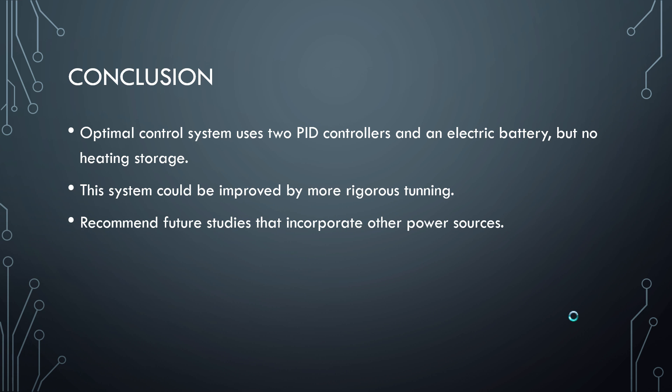In conclusion, the optimal system included two PID controllers that would switch depending on which had the maximum output, to keep it from going into a negative range. It was also optimal to have one electrical battery and no heat storage device. Going forward, we'd recommend more rigorous tuning, further analysis incorporating natural gas as an additional power source since it can change output with less damage to the system, and also testing with solar power, as it is also an intermittent source.